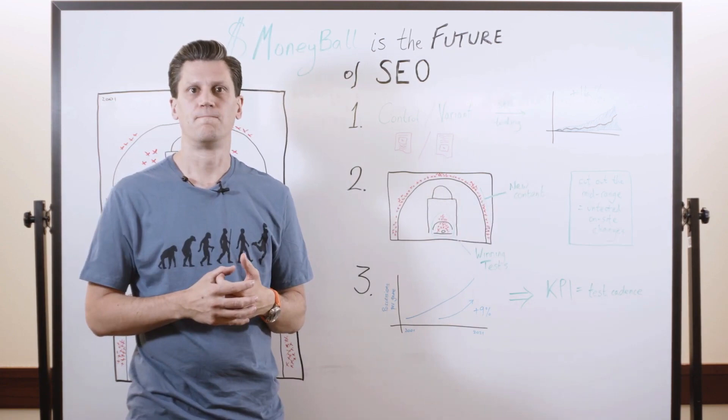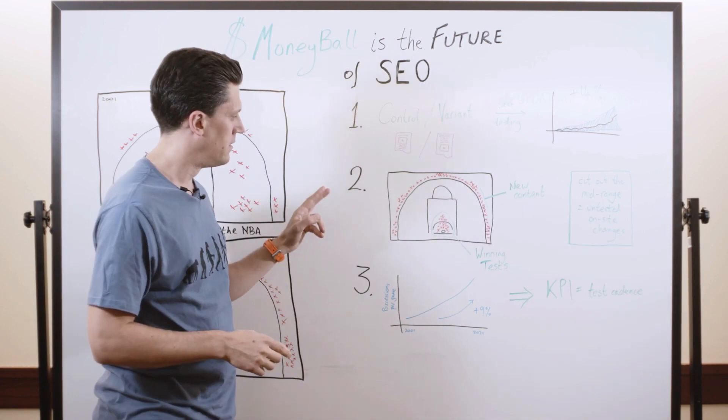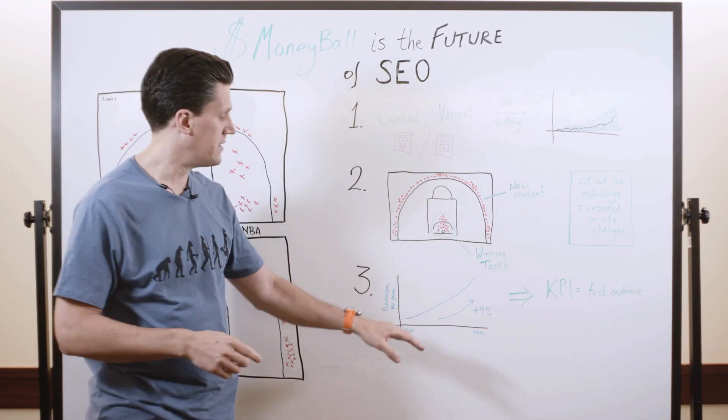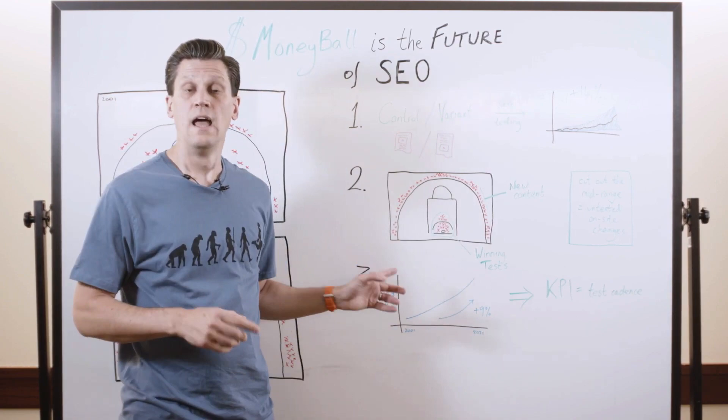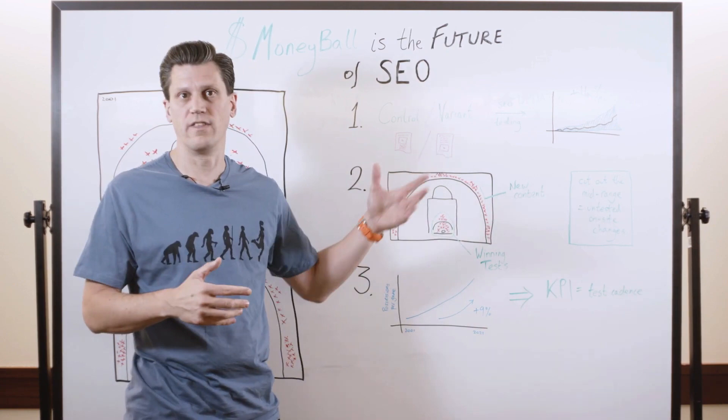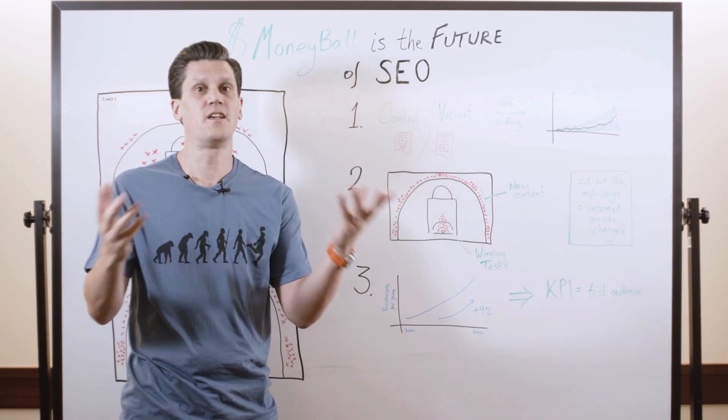And then the final piece of the strategic puzzle here is that you drive your test cadence up. So the basketball equivalent, again, is that over this same time period, possessions per game are up almost 10% over that time. And the reason for that is that if you have an edge, if you have an advantage over your opponents, which is exactly what this kind of advanced insight gives you, you want more goes, right? You want more repetitions.